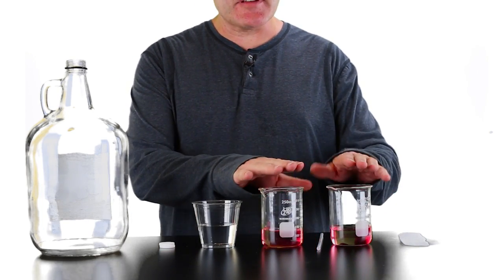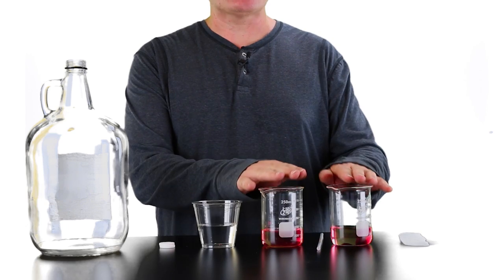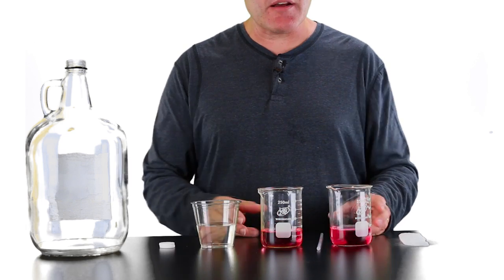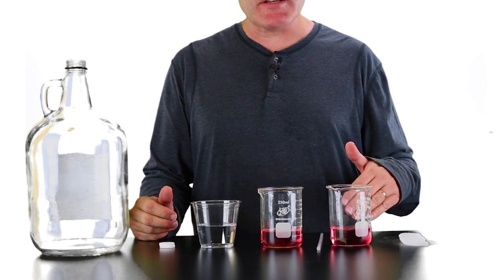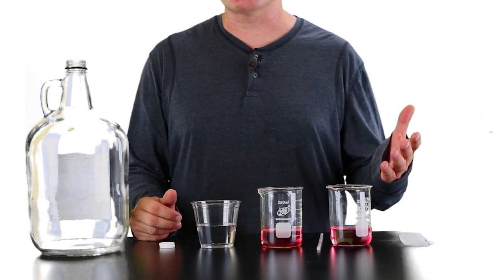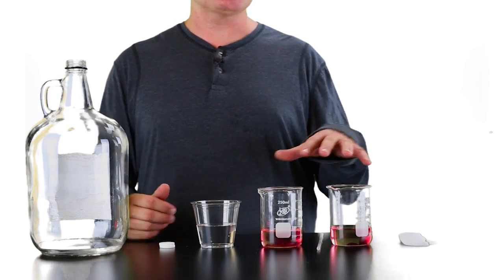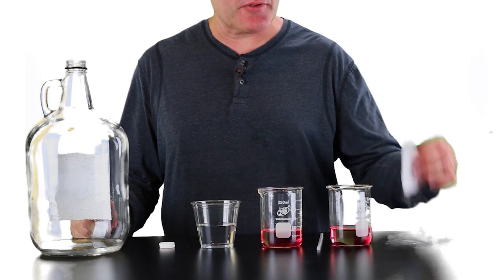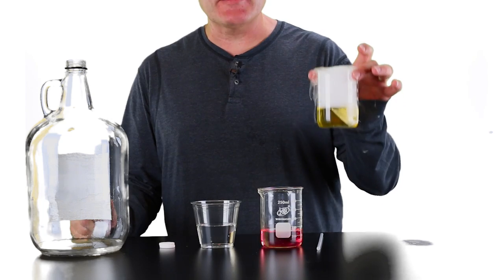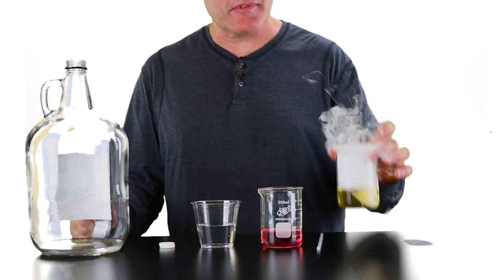I have in here an indicator that will indicate the presence of carbon dioxide. You can see that it's pink right now. When carbon dioxide enters, it gets converted to something called carbonic acid, which will change the color of the indicator. I'm going to drop this dry ice, which is carbon dioxide, into here, and you can see that almost immediately it turns yellow.